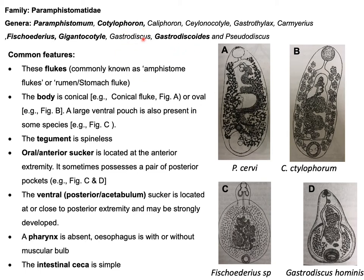All these genera possess some common morphological features. Before talking about these morphological features, I would like to introduce some figures related to species under different genera. The first one is Paramphystomum cervi, the next one is Cotylophoron cotylophoron, the third one is Fiscoidarius, and the last one is Gastrodiscoides hominis.